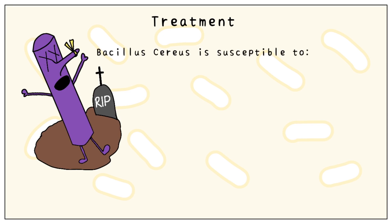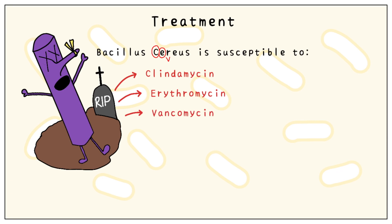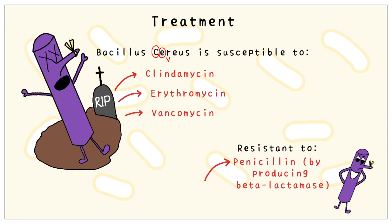For the treatment, Bacillus cereus is susceptible to C for clindamycin, E for erythromycin, and V — which looks very much like a lowercase r — for vancomycin. Bacillus cereus is resistant to the most famous antibiotic, penicillin, by producing beta-lactamase, and also to trimethoprim.